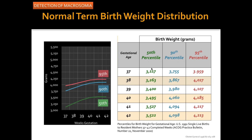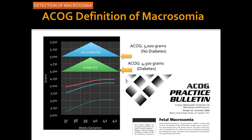The American College of OBGYN published data in a technical bulletin in 1996, defining the incidence or percentiles for fetal weight based upon gestational age from 37 to 42 weeks, calculating the 50th, 90th, and 95th percentiles. In ultrasound parlance, we often discuss weights above the 90th or below the 10th percentile. However, ACOG defined macrosomia for the diabetic patient as an estimated fetal weight above 4,500 grams and for non-diabetics, 5,000 grams — well above the 95th percentile. The question remains: do we act based upon these numbers, or are there other tools for evaluating risk for shoulder dystocia?